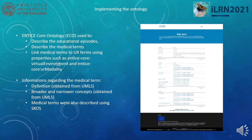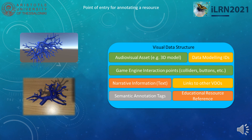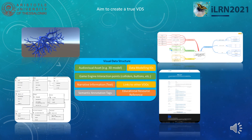Information regarding the medical terms included the definition, broader and narrower concept obtained from UMLS, and medical terms were described using SKOS. This work is the point of entry for annotating a resource and creating an integrative visual data structure. The aim is to create an applicable full visual data structure containing the UX taxonomy, the constructed UMLS metathesaurus terms integrated in the framework, along with the actual resource — the 3D model, animation, or similar — as well as narrative and choice-based architecture like that implemented in previous work for virtual patients in OpenSim and Second Life.